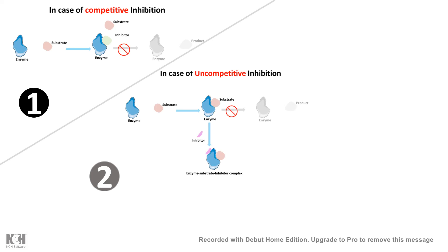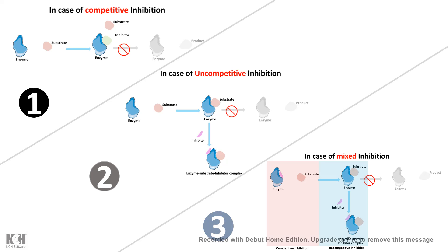The second type of inhibition is uncompetitive inhibition, where the inhibitor binds to the enzyme-substrate complex and forms an enzyme-substrate-inhibitor complex. As a result, the substrate is not converted into the product.